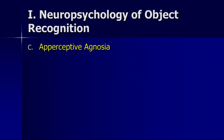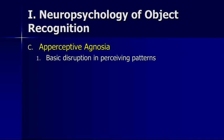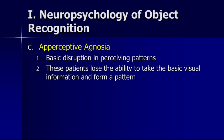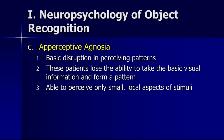There are two or three different versions of agnosia. The first and most disabling is called apperceptive agnosia — this is a basic disruption in perceiving patterns. These patients lose the ability to take basic visual information and form any kind of pattern. Remember when we talked about feature theories: recognizing individual features and putting them together to form a pattern, and then recognizing that pattern. Individuals with apperceptive agnosia are able to perceive only small local aspects of stimuli. One of the things we often do with neuropsychology patients is ask them to copy line drawings.